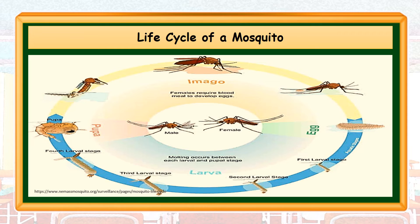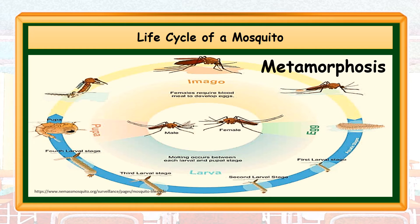Does the mosquito change its appearance? Correct! Mosquitoes do change their appearance, and this is called metamorphosis. Metamorphosis refers to the way that certain organisms develop, grow, and change their form.